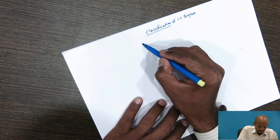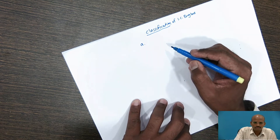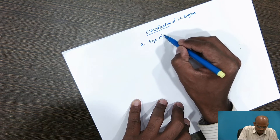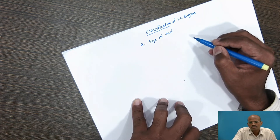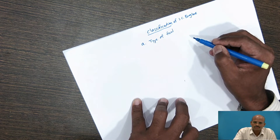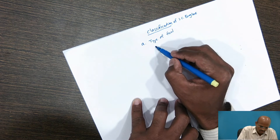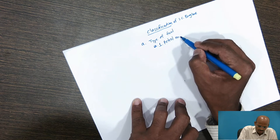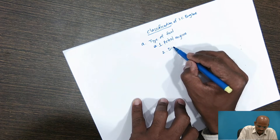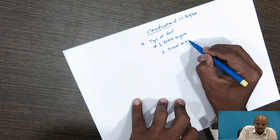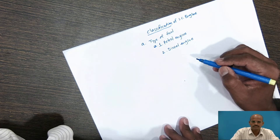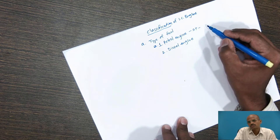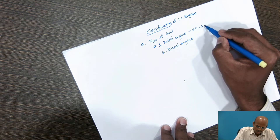First classification: engines are classified on type of fuel. As we know, in society, only two types of engines for passenger vehicles we are using. First is called petrol engine, and second one is the diesel engine. For petrol engine, we are using the spark plug, so these engines are also called SI engine — spark ignition engines.